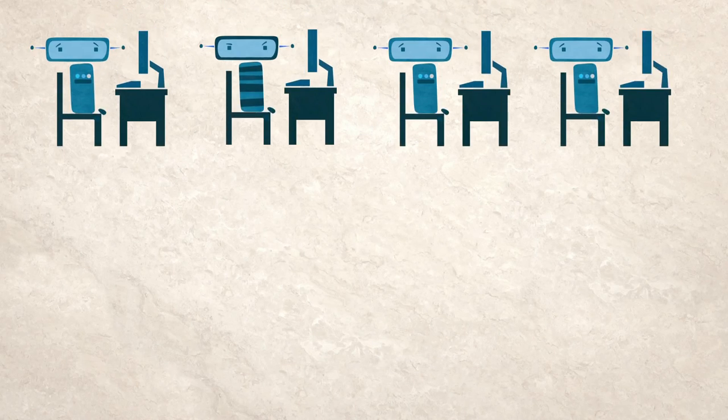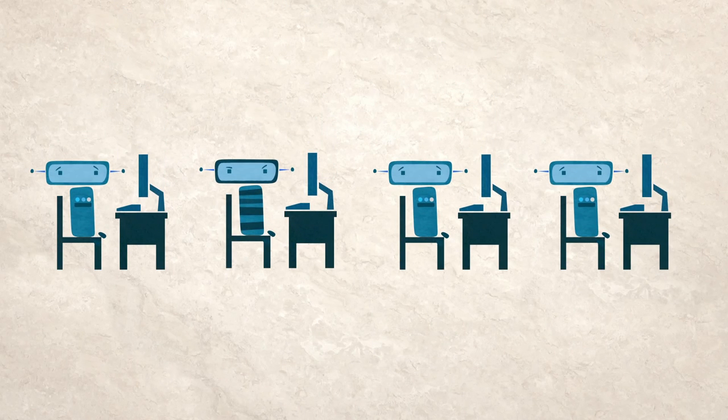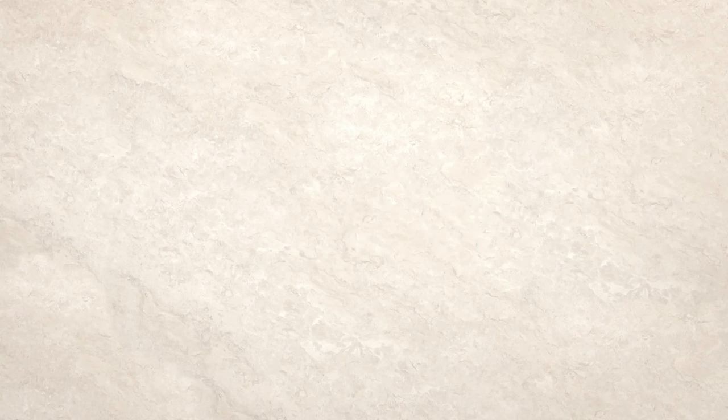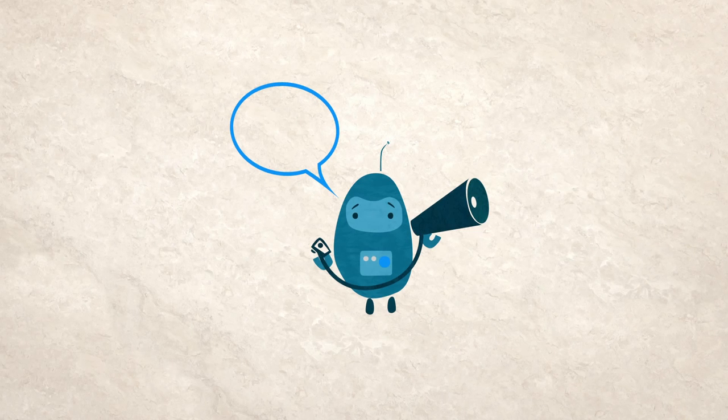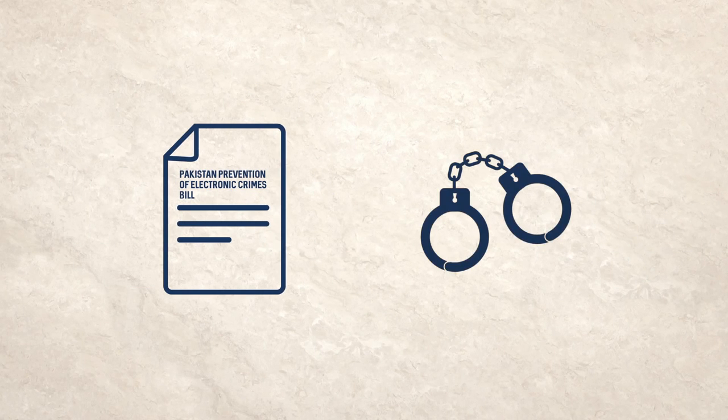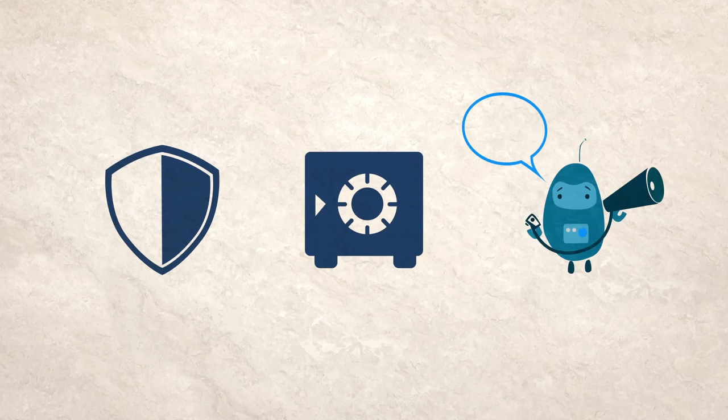This is a good example of a disproportionate measure in response to a securitized framing of a threat. The bill makes no distinction between the tiny number of users who might use anonymity for criminal purposes and the vast majority of users who simply wish to protect their right to privacy. It also threatens free speech by criminalizing content deemed to praise those accused of a crime. The bill is not only an ineffective approach to fighting crime, it also threatens online security and data protection and undermines free expression online.